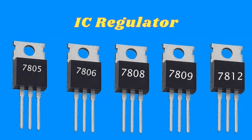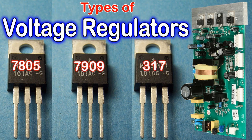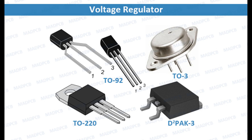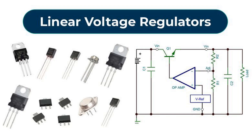Amplification: The error signal is typically amplified to provide sufficient control over the regulator's output. The amount of amplification depends on the design of the voltage regulator IC and the required precision of the voltage regulation. Feedback loop: The error signal is then fed into the feedback loop of the regulator, where it is used to adjust the control element, such as a transistor, that regulates the output voltage. The feedback loop continuously monitors the output voltage and adjusts the control element to minimize the error signal, thereby maintaining the output voltage at the desired level.